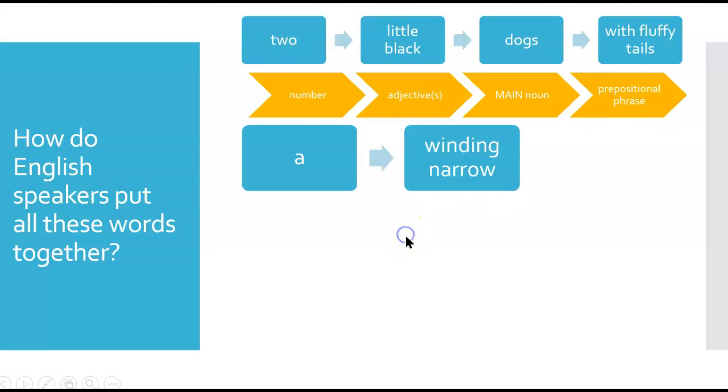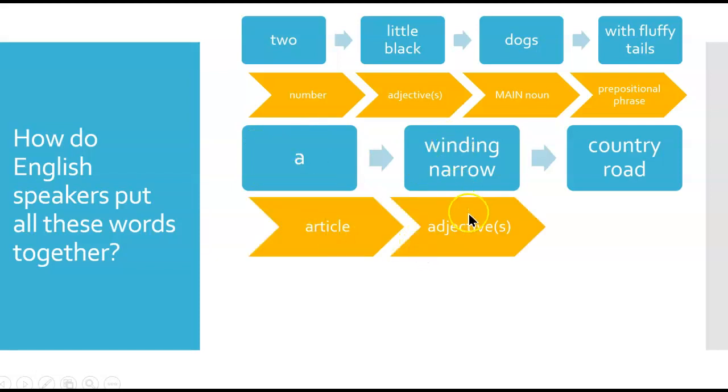The next one was a winding, narrow country road. What's a, an, the? That's an article, then the adjectives, and then a compound noun, which is just a way to say two nouns together: country, road.